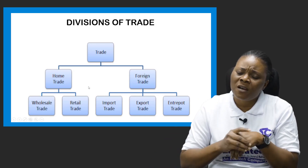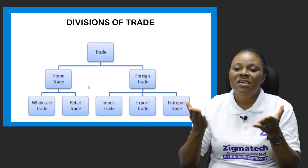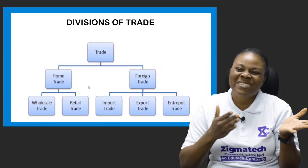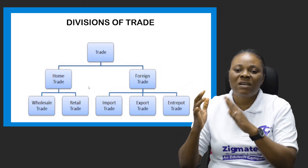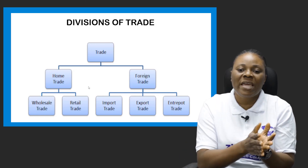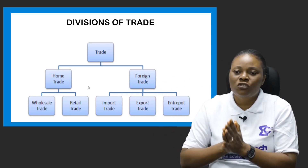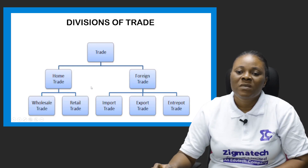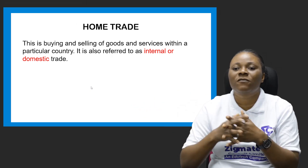For exam purposes, if you're asked to explain trade with the aid of a diagram, this is what's expected: show that trade divides into home trade and foreign trade; home trade further divides into wholesale trade and retail trade; and foreign trade divides into import trade, export trade, and entrepot trade. Let's now take each division one after the other. I've already defined trade as the buying and selling of goods and services.